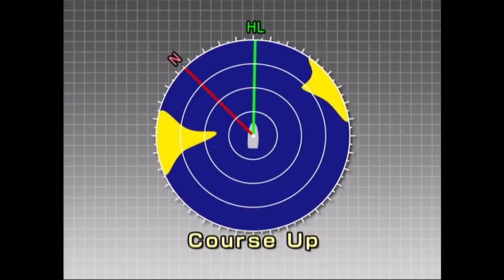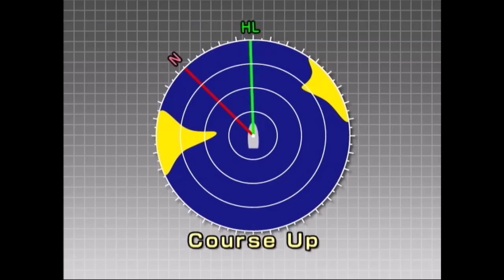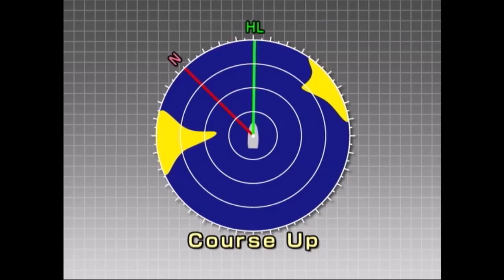In the course-up mode, own ship's course is positioned at the top of the screen. As with the true azimuth display, fixed targets are displayed without stagger, even if own ship is yawing. Also, the direction of the ship's heading moves only when a change is made in own ship's course. To change course, select course-up mode by pressing the azimuth mode button several times.